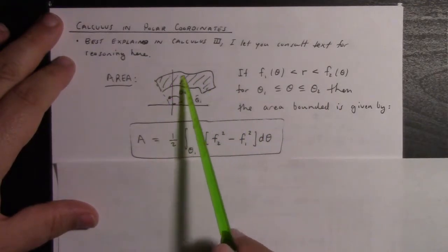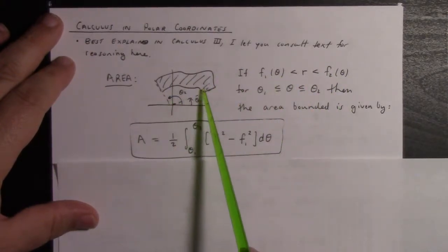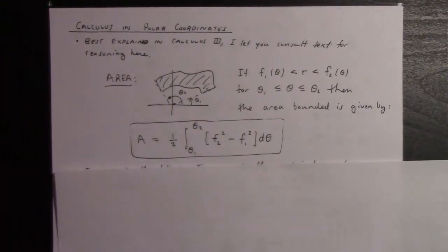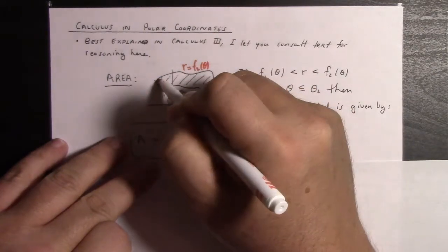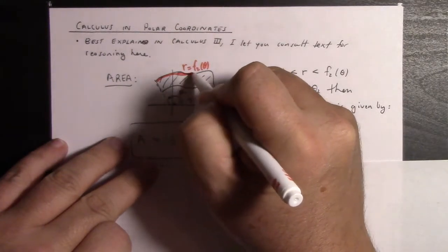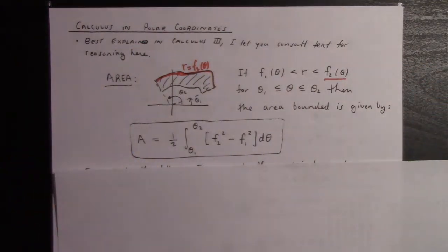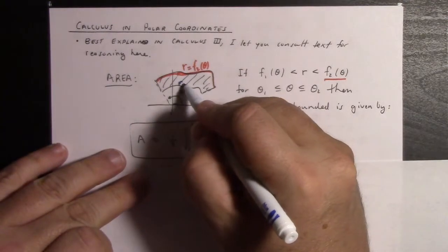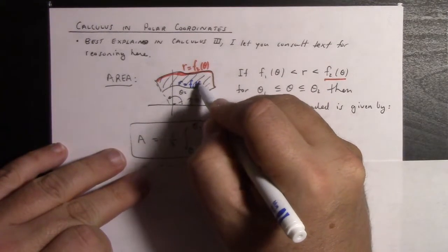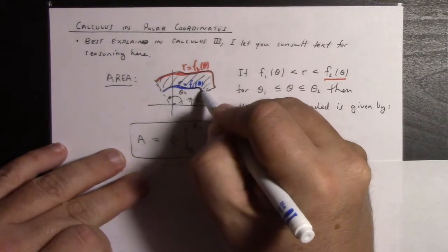So to calculate this area, if it has an inner radius of f₁ and an outer radius of f₂, this is my f₁, that's my f₂. r equals f₂(θ) is this one, and r equals f₁(θ) is that one.